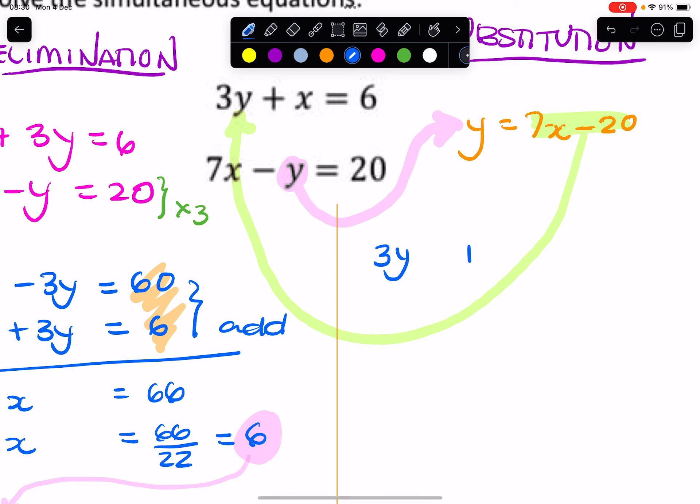Instead of 3y plus x equals 6, I can replace this with that. So it becomes 3 times (7x minus 20). Okay, so this is that. So now my expression only has x in it, and therefore I can solve it. So that's 21x minus 60 plus x equals 6, because you want to expand the brackets.